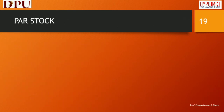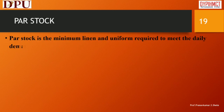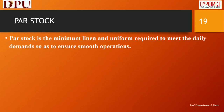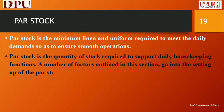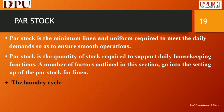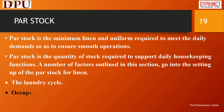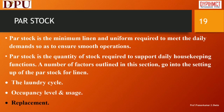Par stock is the minimum linen and uniform required to meet daily demands so as to ensure smooth operations. It is the quantity of stock required to support daily housekeeping functions. Factors that go into setting up par stock for linen include: the laundry cycle for linen, occupancy level and usage of linen, and replacement interval during the year.